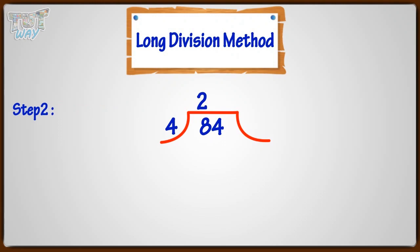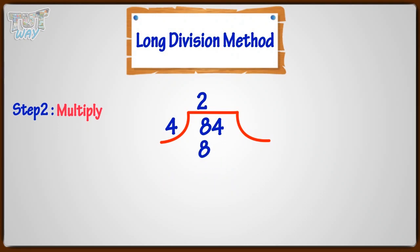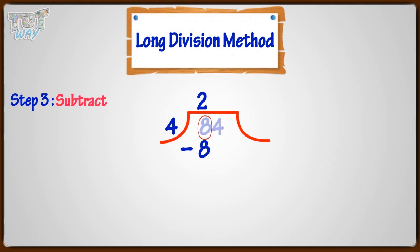Now the second step is multiply. Multiply the divisor with the number we found in the previous step, and write the product below. Now, following the third step is subtract. Subtract the multiple from the first digit of the dividend, and write the difference below.